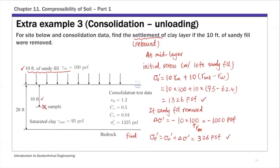Once we have these stress values — the initial stress before removing the sandy fill and the final stress after — we can compute the primary consolidation settlement, which is actually a rebound. Since we're removing load, the clay follows the recompression curve — the unloading-reloading portion. The formula is: Sc equals H over 1 plus e-naught, times Cs, times log of sigma-f-prime over sigma-naught-prime. Since we're unloading, we use the recompression index C-sub-s.